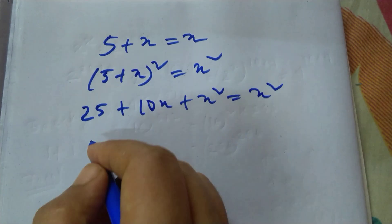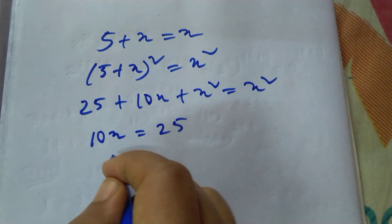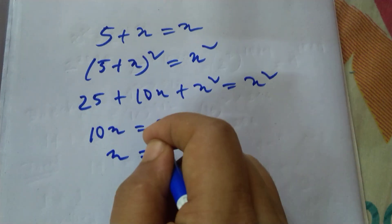So I get 10x = -25, so x is equal to minus 5/2.